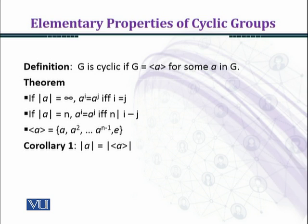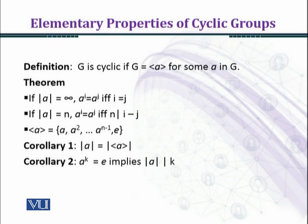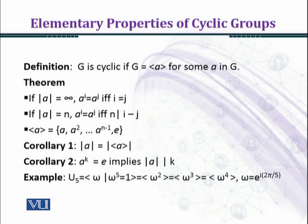Corollary one: the order of a equals the order of the cyclic group generated by a. Corollary two: a^k equals e implies the order of a divides k. Now we consider some examples.